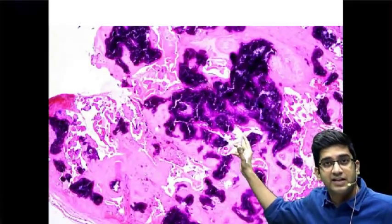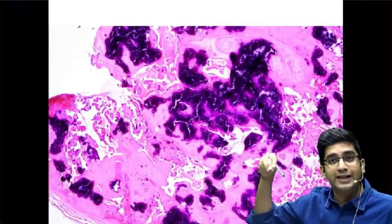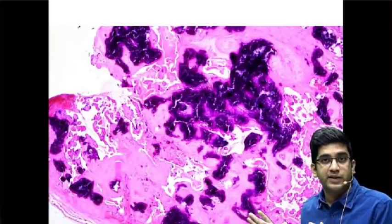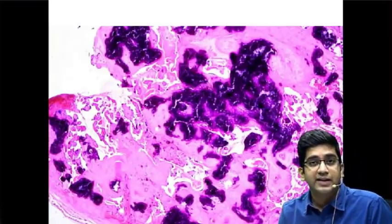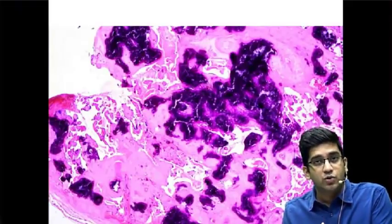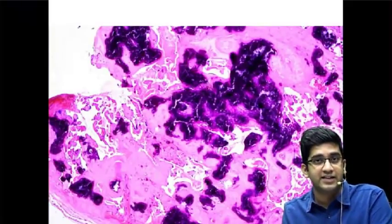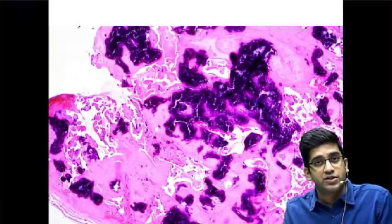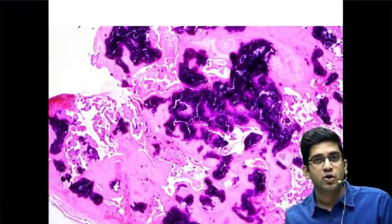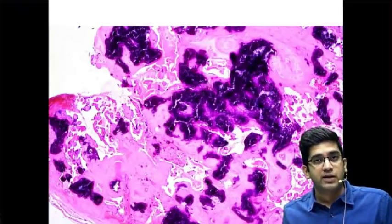Compare this calcification with the comedo necrotic in the center of the duct in case of DCIS. When I zoom this out it will become big - they won't be fine. So when I see a fine calcification in a mammogram, it correlates to the necrotic calcification in case of DCIS. When you see a coarse calcification in a mammogram, it's going to correlate to a benign lesion. This is the simplification of how what I'm going to see in microscopy is going to reflect in the mammogram.